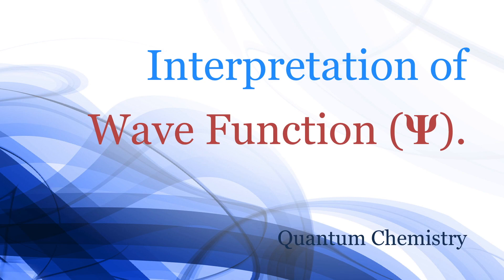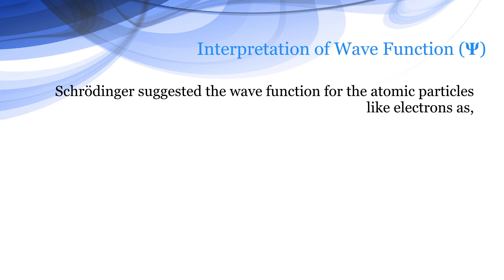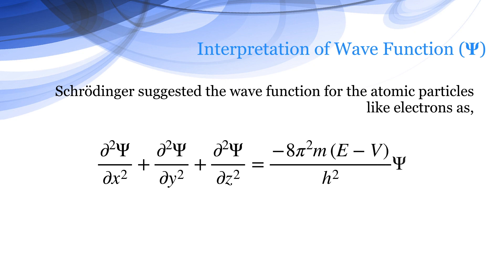Interpretation of wave function Ψ. Schrödinger suggested the wave function for atomic particles like electrons as ∂²Ψ/∂x² + ∂²Ψ/∂y² + ∂²Ψ/∂z² = -8π²m(E-V)/h²Ψ. This equation gives a wave in three dimensions with amplitude Ψ.